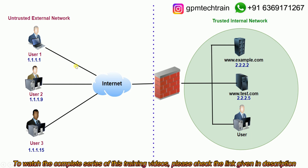Whatever traffic is passing in or out must go through only this firewall. When I say going in and out, I'm referring to the network. For example, if user 1, user 2, or user 3 wants to connect to an application, that traffic must go only through the firewall, and the return traffic will also pass through the firewall. A user cannot bypass the firewall and cannot go directly to the destination. All incoming and outgoing network traffic passes only through it.